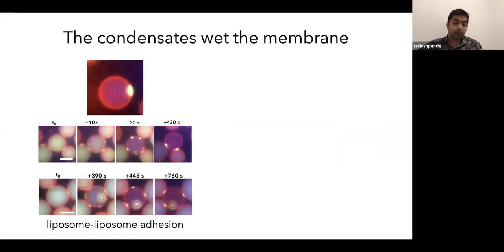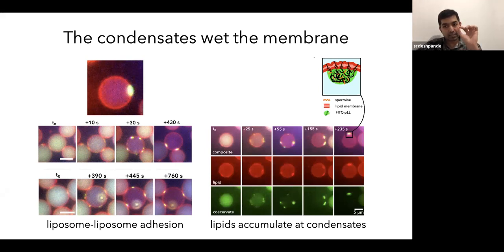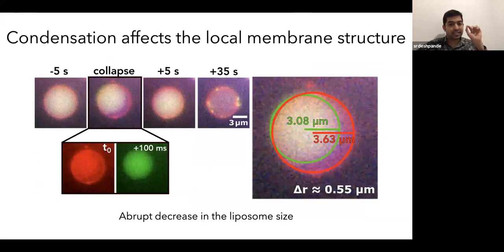So the condensates wet the membrane, but we observed another interesting thing. And that was these condensate patches when the liposomes were kind of in contact with each other, they kind of glued these liposomes together. It kind of suggests that there might be some kind of a transmembrane interaction with it, but we are not very sure about it. And this could be an interesting thing to explore further. Another interesting observation was at these condensate patches, the lipid fluorescence increased, meaning the lipids were kind of accumulating at these condensates. And in fact, we caught a few examples where just when the condensation occurred, we saw an abrupt decrease in the liposome radius. And that kind of suggests that this condensation might be affecting the local membrane structure. So this could be something really interesting happening here, and we would like to explore it further.